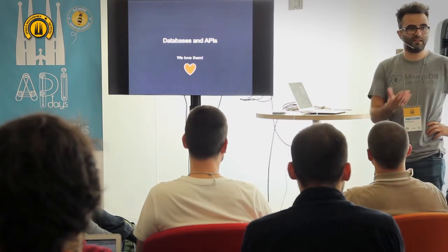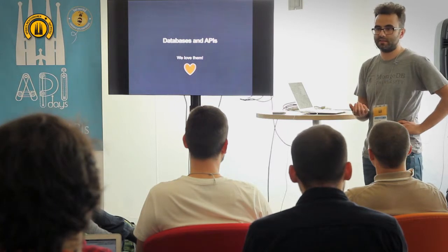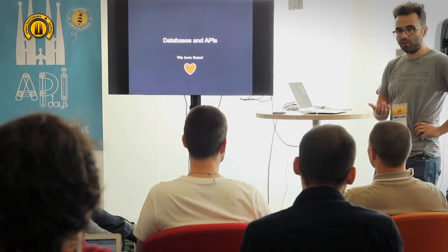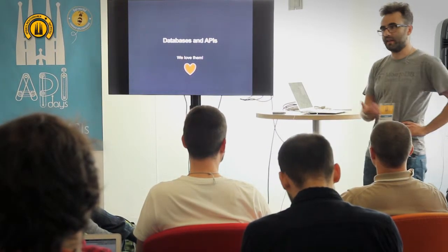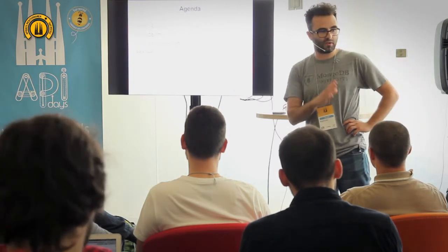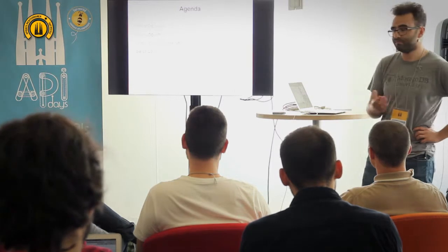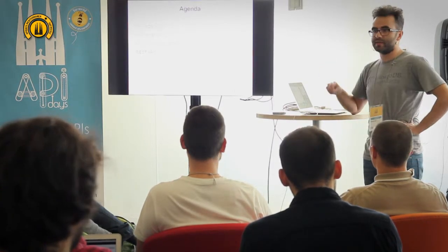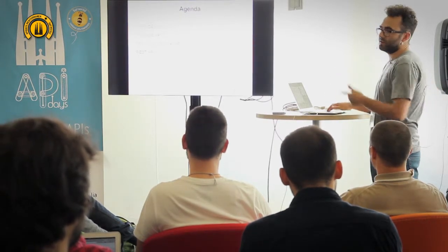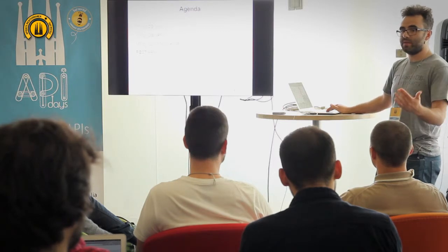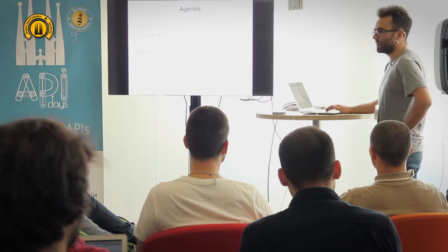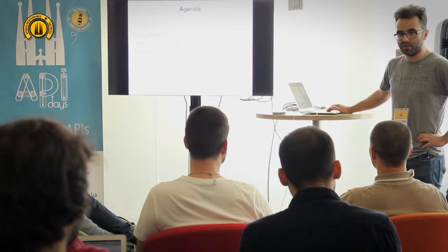Does anyone here use a database that doesn't have an API? An API always uses some kind of API, even if it's just a server driver. And we love them a lot. I'm going to explain a little bit about what MongoDB is, talk about MongoDB-specific APIs — which ones are available, which ones are not — and talk about Ops Manager and what we can do in terms of a REST API. And a couple of instructions around how to build APIs, especially how to build APIs with MongoDB.